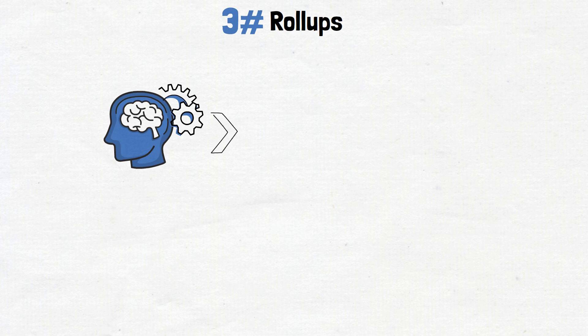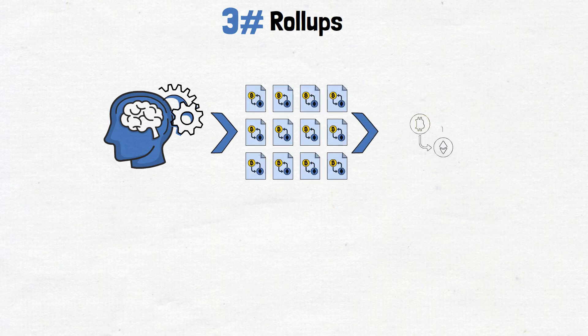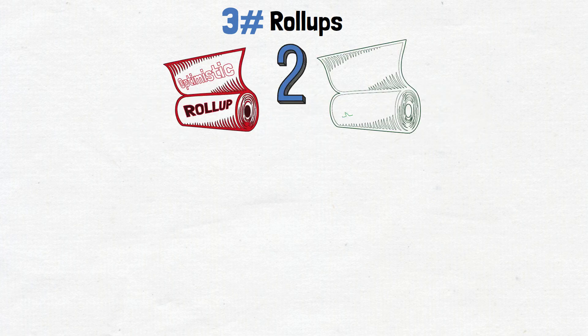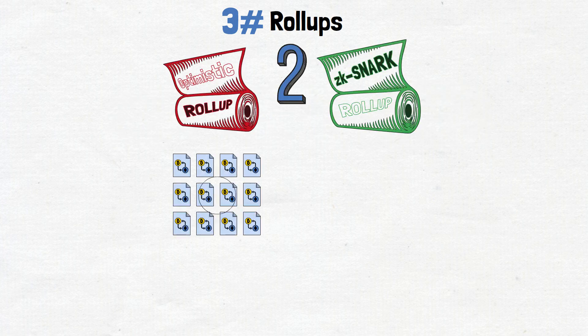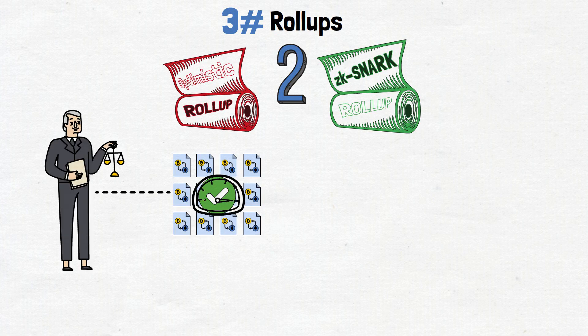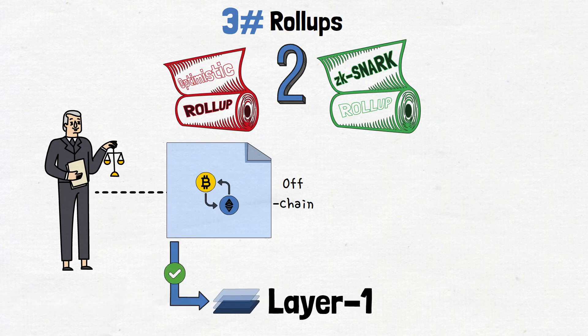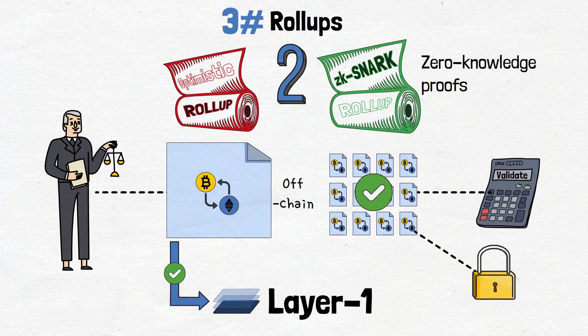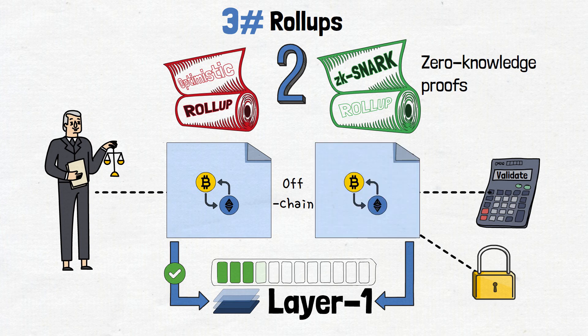Now, let's unpack rollups. These are clever mechanisms that bundle multiple transactions into a single, summarized package before submitting them to Layer 1. There are two main types, optimistic and ZK rollups. Optimistic rollups assume transactions are valid unless proven otherwise, allowing for faster processing off-chain before submitting the aggregated results to Layer 1 for verification. On the other hand, ZK rollups utilize zero-knowledge proofs to mathematically validate the bundled transactions, ensuring their correctness without revealing the individual transaction details. Both types of rollups aim to ease the burden on Layer 1 by condensing multiple transactions into efficient data batches.